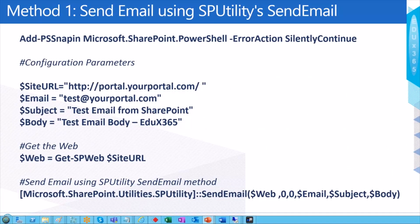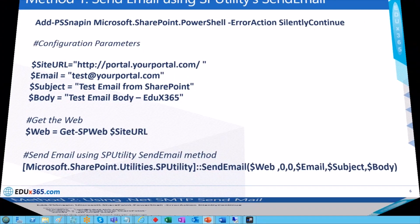Here is the sample code for the first option — using the SPUtility.SendEmail approach. You set up the configuration parameters, get the SPWeb object, and finally use the SPUtility.SendEmail method, passing the parameters to test it.